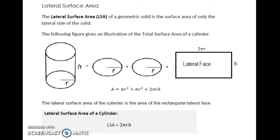Lateral surface area. The lateral surface area or LSA of a geometric solid is the surface area of only the lateral side of the solid.